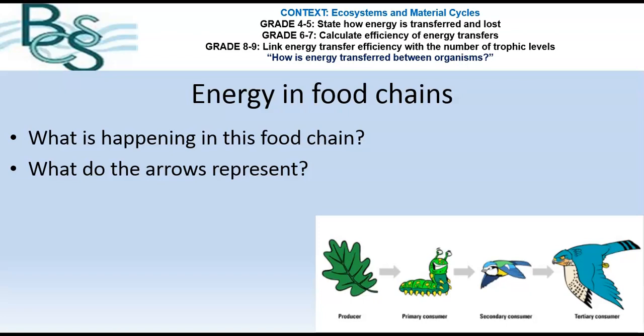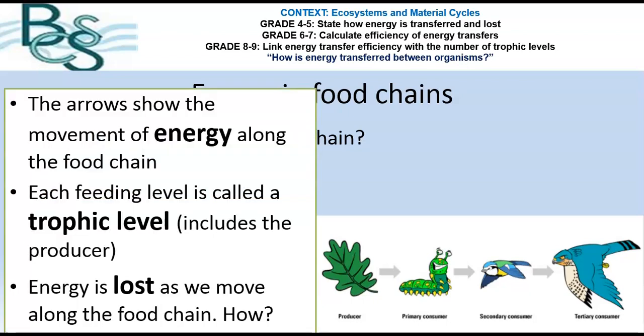What we're going to look at today is the energy in food chains. We kind of touched on this last lesson when we looked at food chains and food webs, and we talked about the arrows showing the movement of energy along the food chain. So the energy starts, or is provided by sunlight energy, which the producer traps in photosynthesis and converts into chemical energy or glucose.